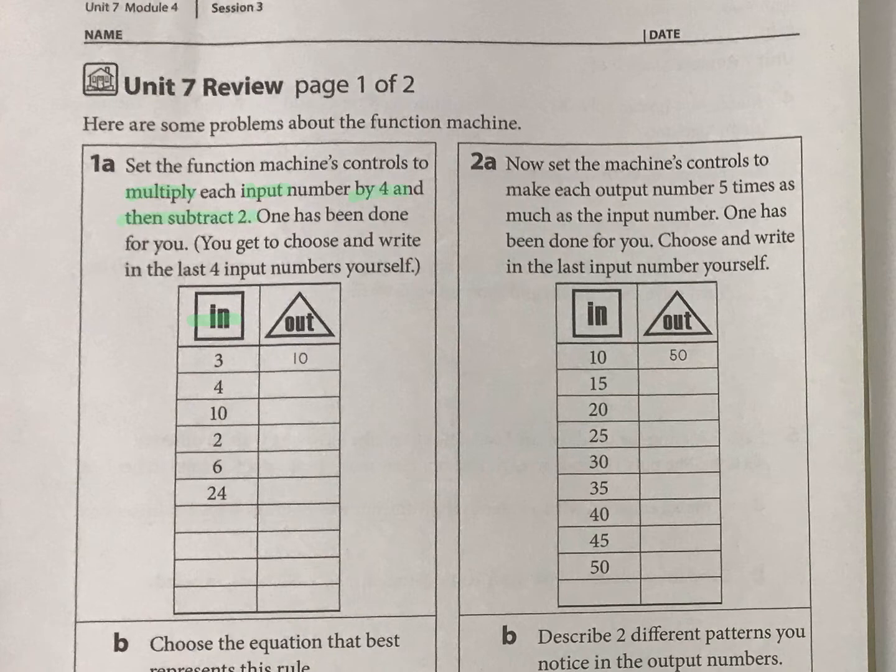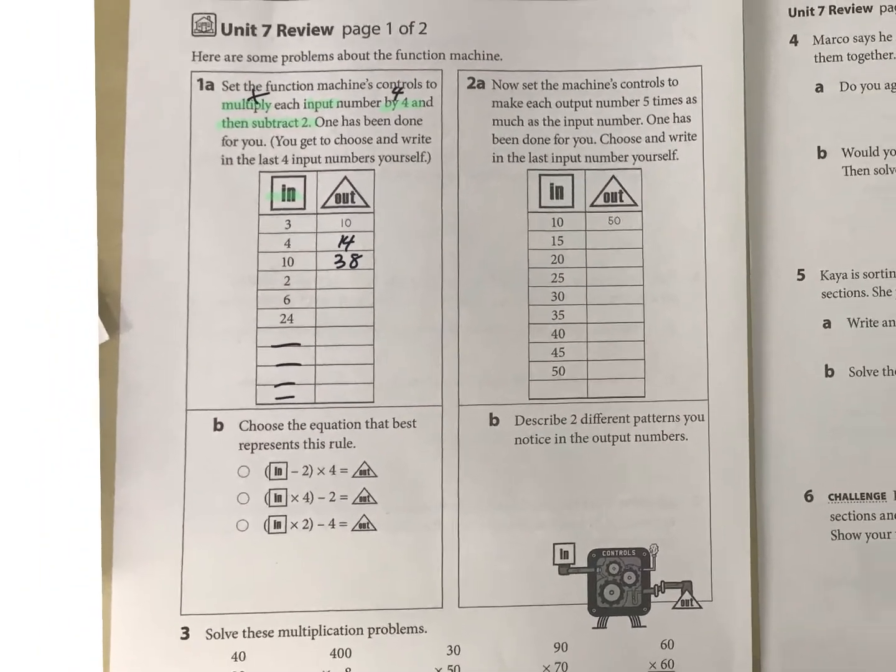So for example, 3 times 4 is 12, 12 minus 2 is 10. What would you do? 4 times 4 is 16, 16 minus 2 is 14. 10 times 4 is 40, minus 2 is 38. That's the pattern, and you can make up some of your own for these ones here.